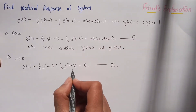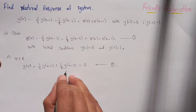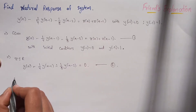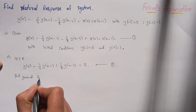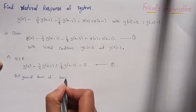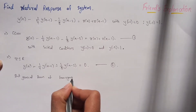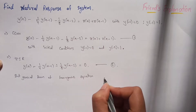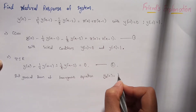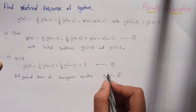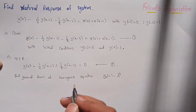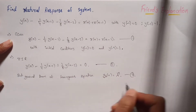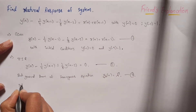This is a second-order homogeneous equation, but it is not yet in the general form. The general form of the homogeneous equation is y_h(n) equals lambda to the power n. We need to substitute this into equation 2 to get the characteristic equation. Let's call this equation 3.